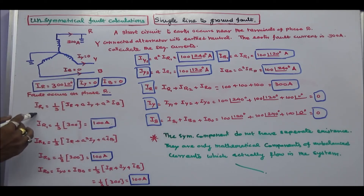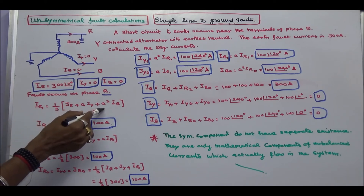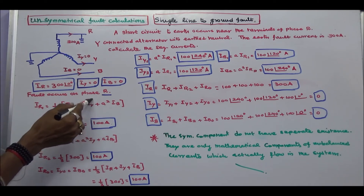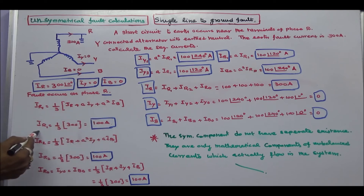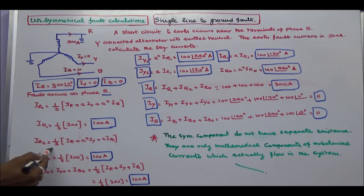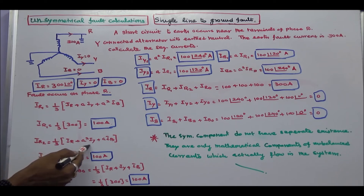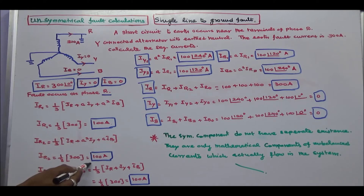Ir1 is equal to 1/3 times (Ir plus A·Iy plus A²·Ib). Since Iy is 0 and Ib is equal to 0, therefore Ir1 is equal to 100 Amps. Ir2 is equal to 1/3 times (Ir plus A²·Iy plus A·Ib). These two terms are 0, so Ir2 is equal to 100 Amps.